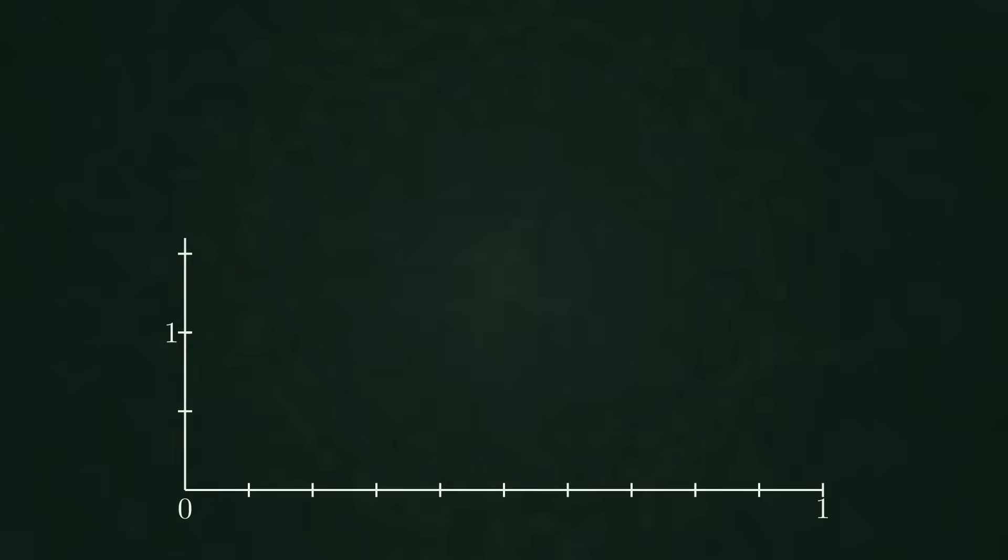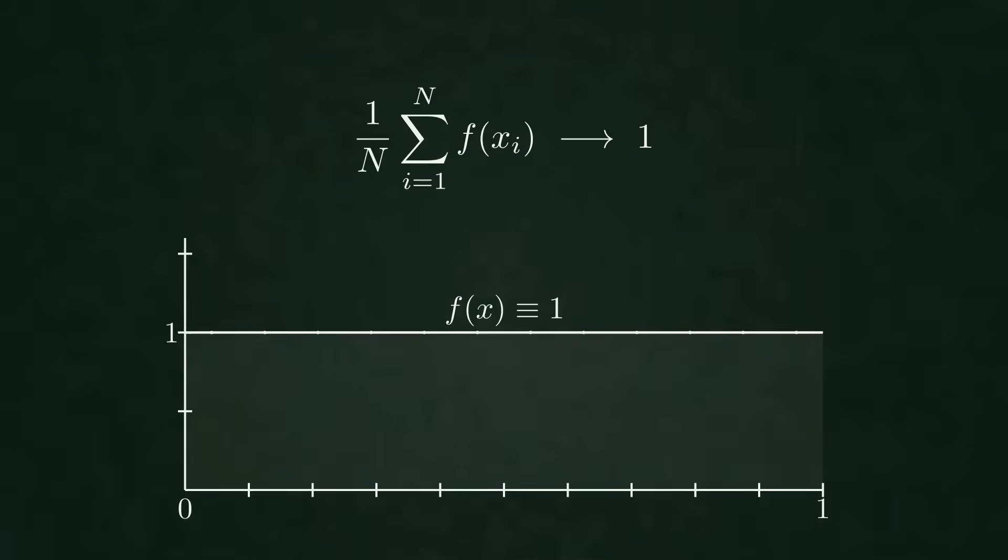Let's test the easiest case first. On the unit interval, take the function which is always constant 1. Evaluate f at evenly spaced points and form the running average. Every term is 1. The average stays at 1. So, here any uniform sequence will give the same value 1.